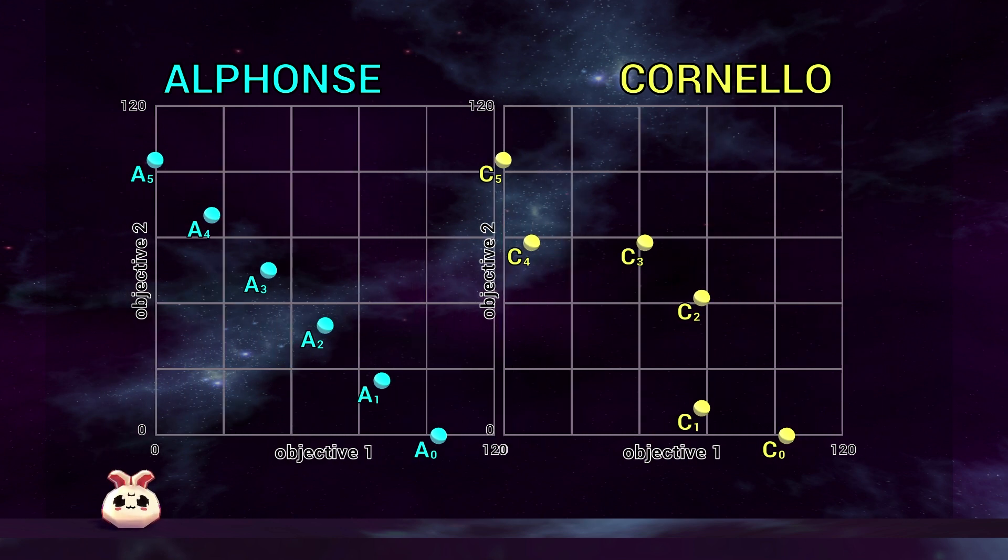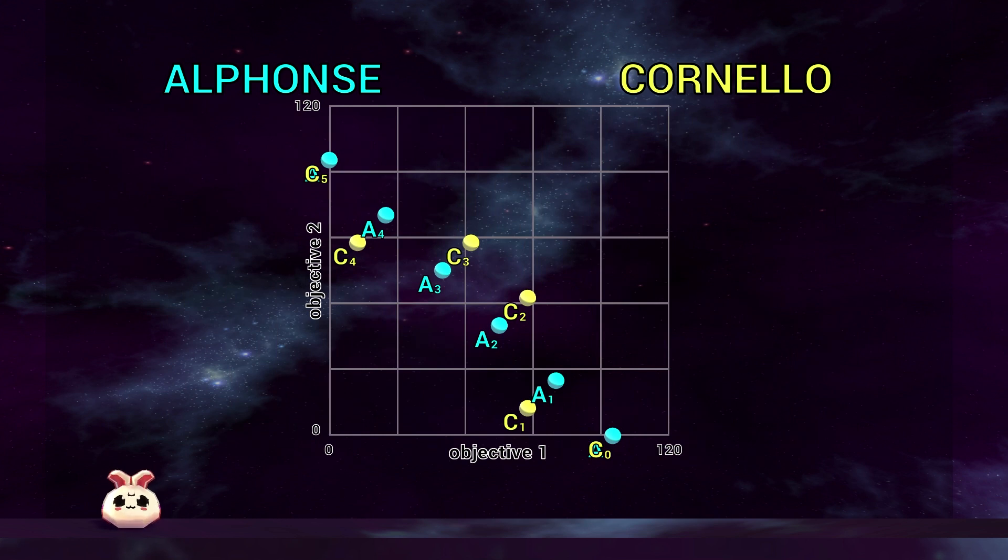When you lay them on top of each other, it's clear that some solutions produced by algorithm Alphonse are better than those of algorithm Cornello, but then some solutions produced by algorithm Cornello are better than those of algorithm Alphonse.